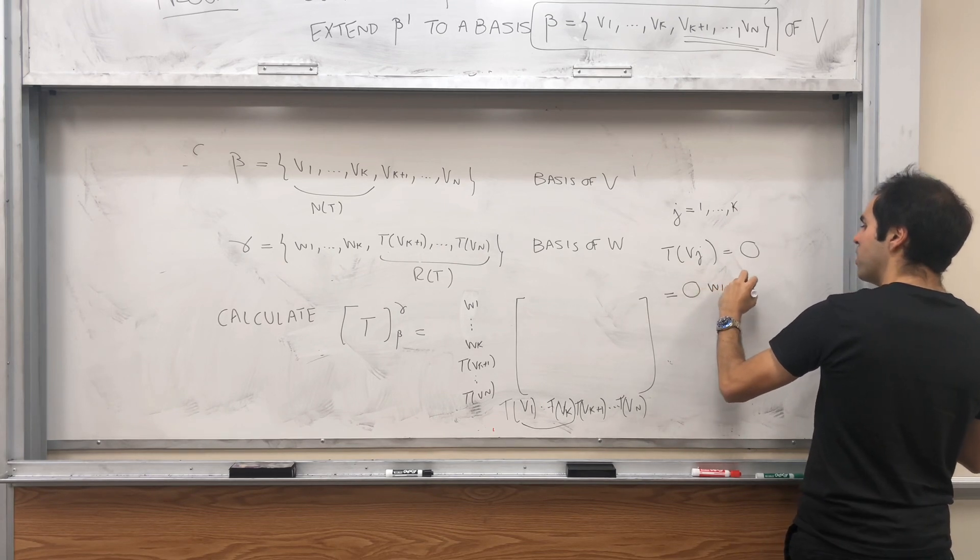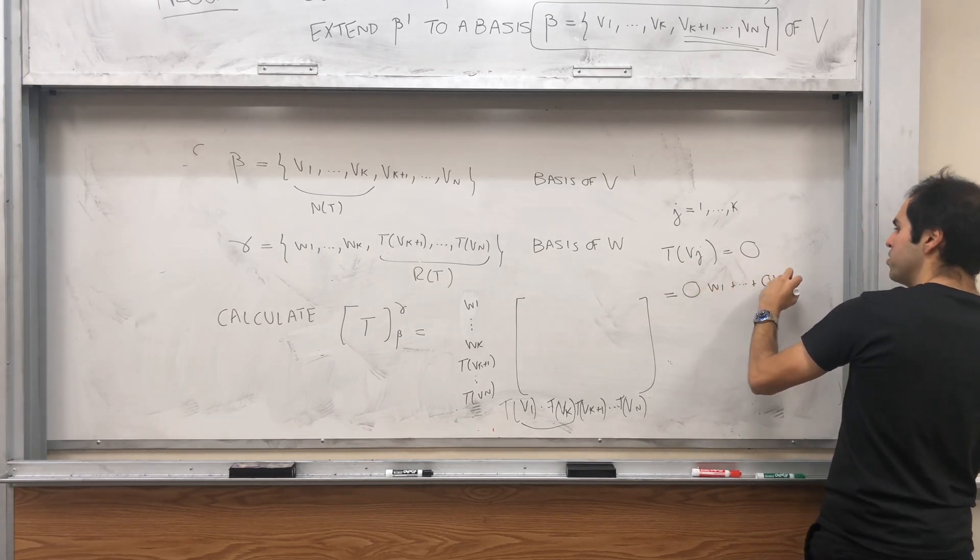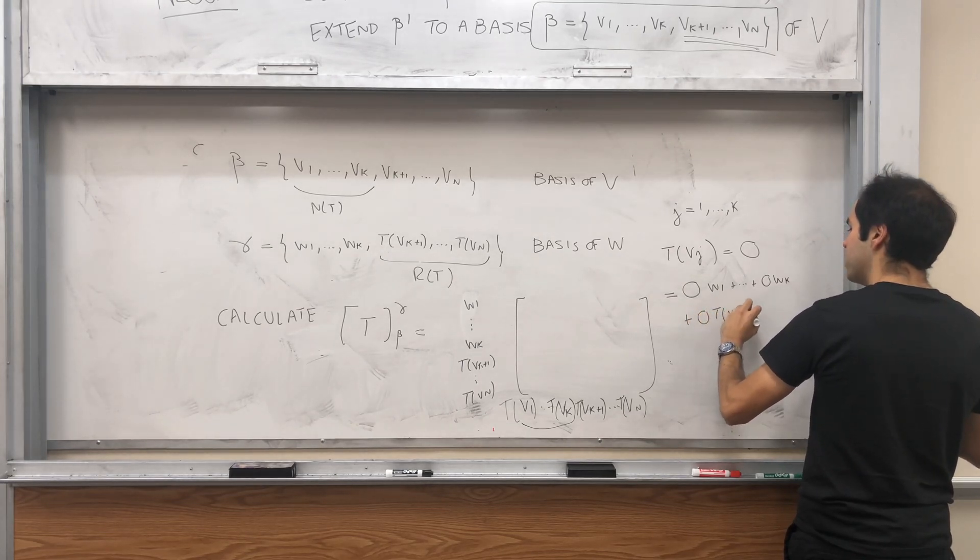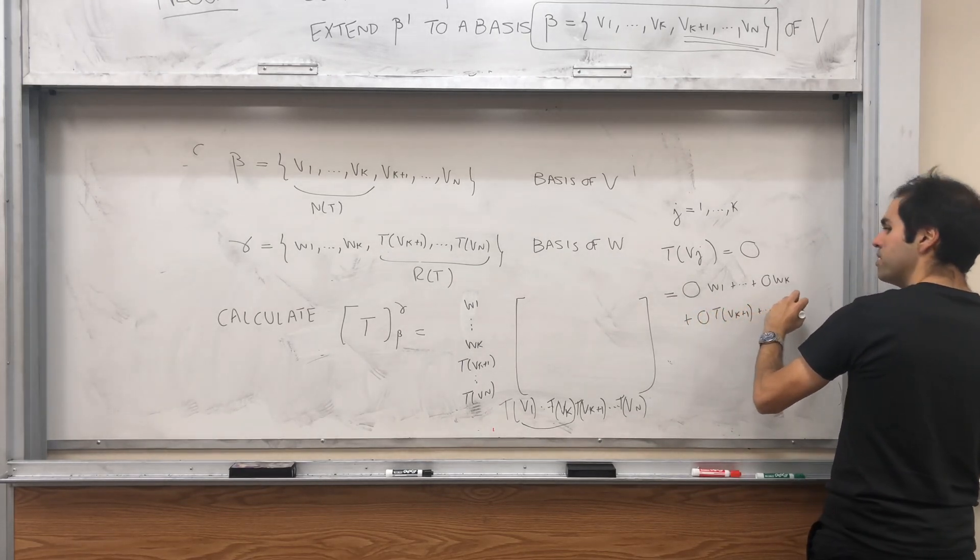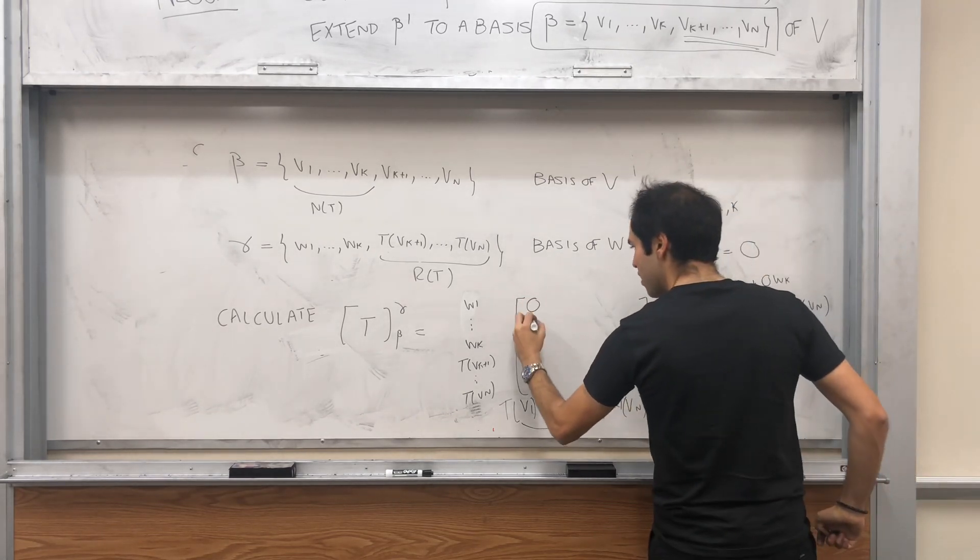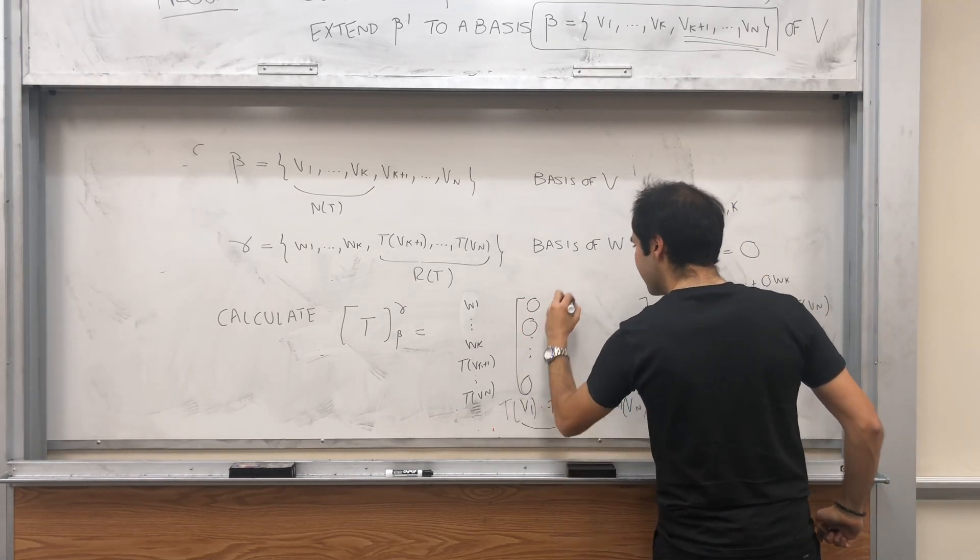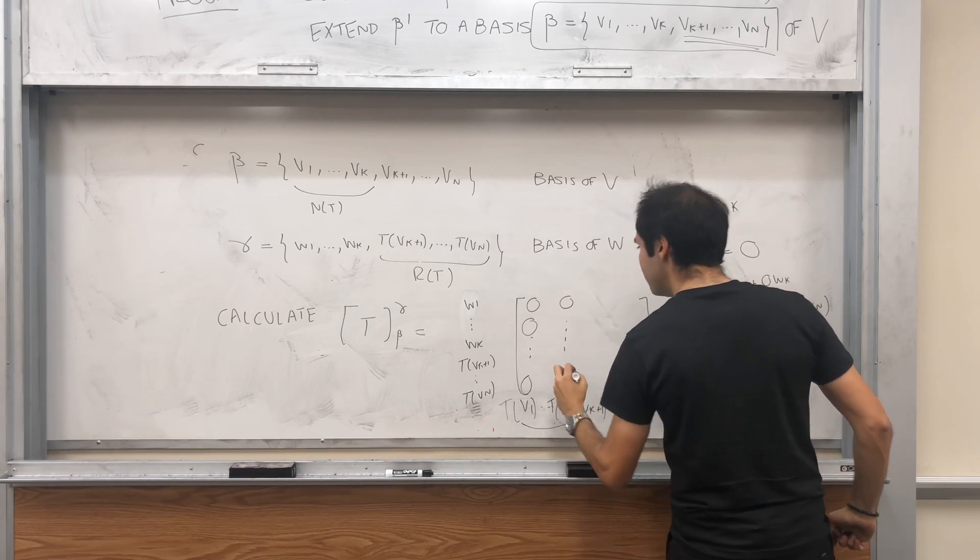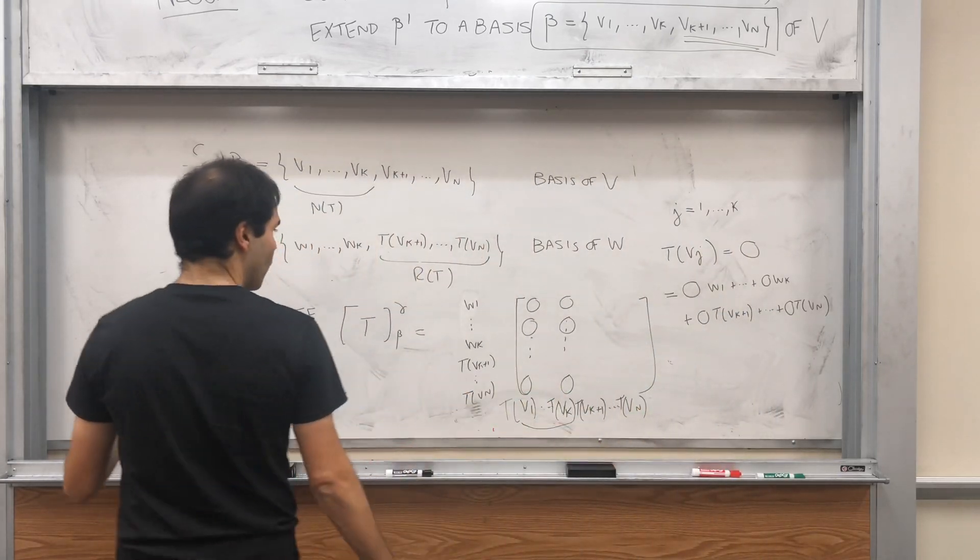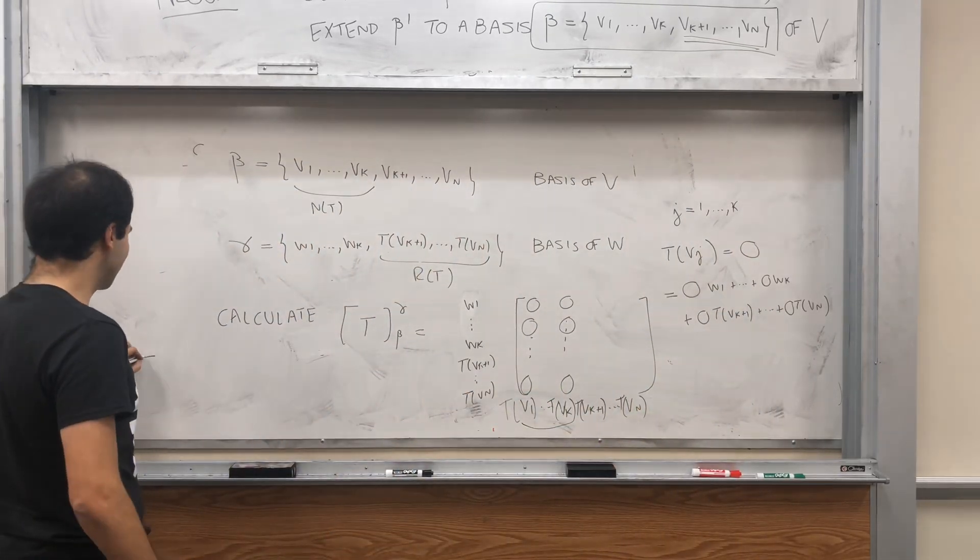But this is 0 w1, plus 0 wk plus 0 t of vk plus one, plus dot dot dot, plus 0 t of vn. Which tells us that the first k columns are just zeros. What about the other ones? Well, notice, it's kind of silly.